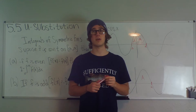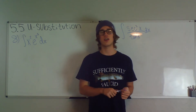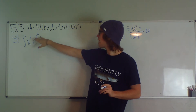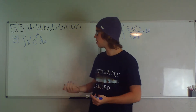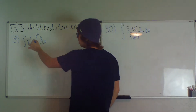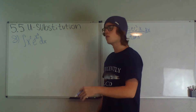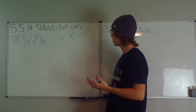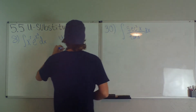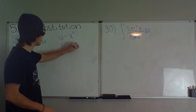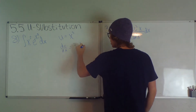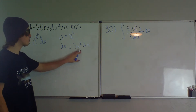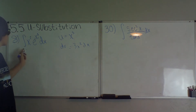Now on to practice problems. We're going to do the integral of x squared times e to the x cubed dx. The u-substitution here should be obvious — we have our function and a composition. So our u is going to equal x cubed. Now we find du: du/dx equals 3x squared, and multiplying by dx on both sides, du equals 3x squared dx.